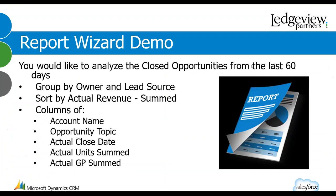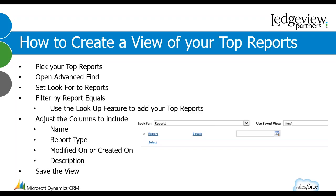Now let's say you frequently look at three or four key reports but don't want to filter through all the various reports each time. Simply create a view to look at your top reports. Open advanced find, set the 'Look For' to Reports, then use Report Equals and the lookup feature to find your top reports. Add columns for report name, report type, modified on or created on date, and description. Save the view, and you can always go back to consistently access your top reports without searching through all the others.